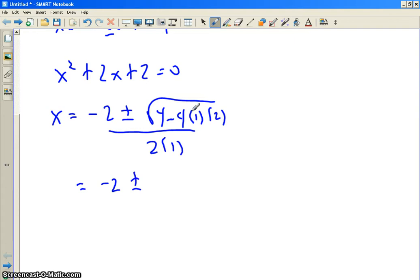Negative 2 plus or minus, let's see, 4 minus 8 is negative 4 in the radical. And that's why we call this term b squared minus 4ac, the discriminant.